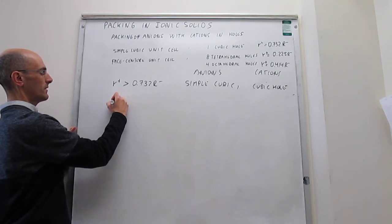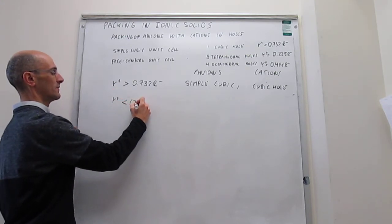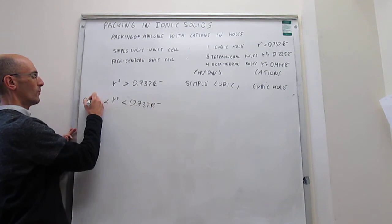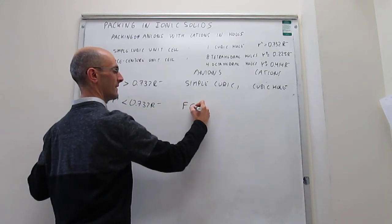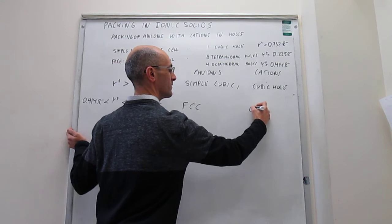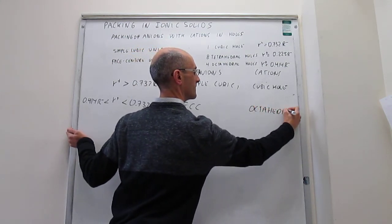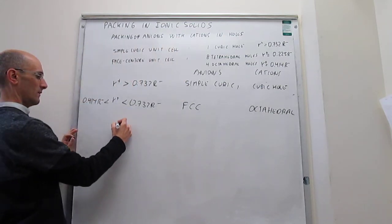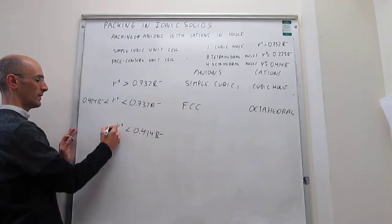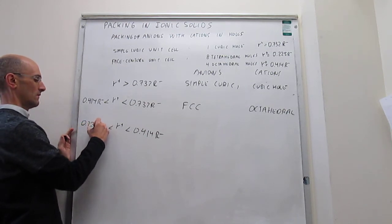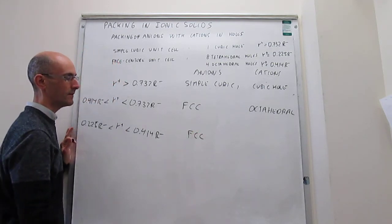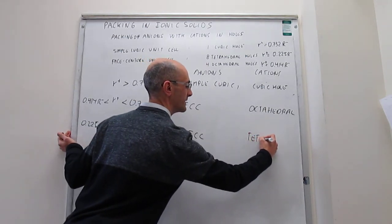Now, if you have that the radius of the cation is smaller than this number but larger than the limiting number for the octahedral hole, 0.414R-, then you will have that the anions will pack in a face-centered cubic packing, and then the cations will be in the octahedral holes. And if the cationic radius happens to be in between the limiting octahedral radius and the limiting tetrahedral radius, then the anions will pack in a face-centered cubic manner with the cations occupying the tetrahedral holes.